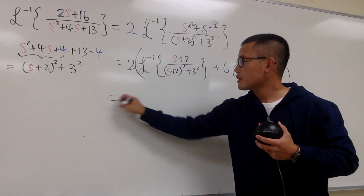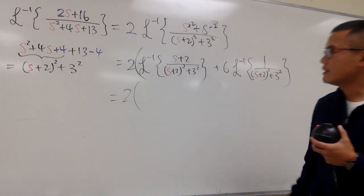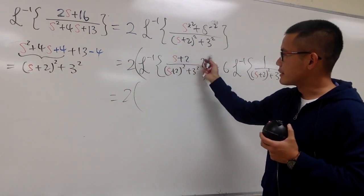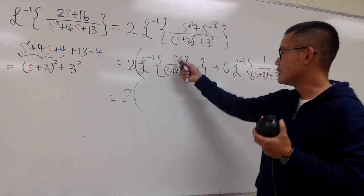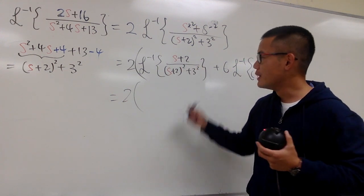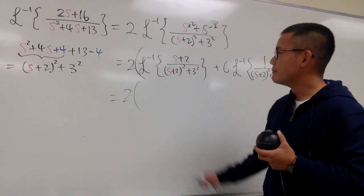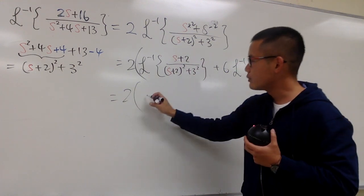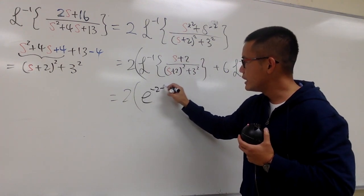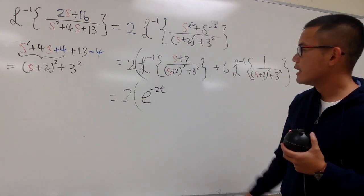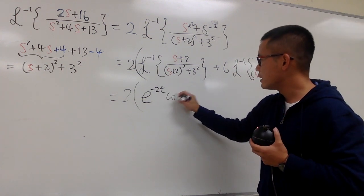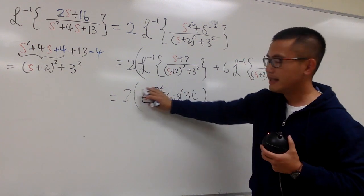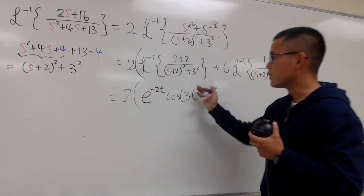This right here. Once again, I'll put on 2 all the way in the front. We can do it, right? s on the top and also s on the bottom. And even though this is s plus 2, s plus 2, you know it's going to be some kind of cosine. But it's s plus 2, that means s minus negative 2, that means I have to multiply by e to the negative 2t, right? In the t world. And then cosine of 3t. And you don't need to divide or multiply by any other numbers for this part. For cosine, this is it.